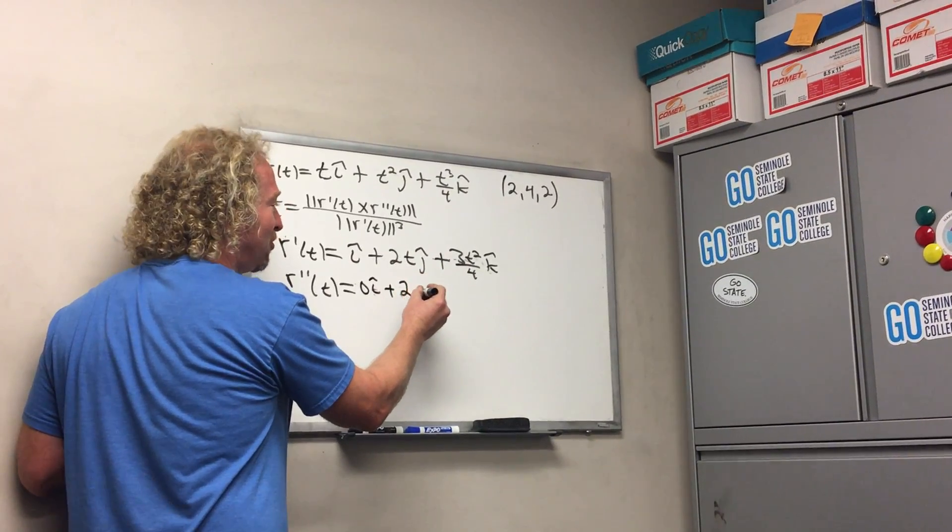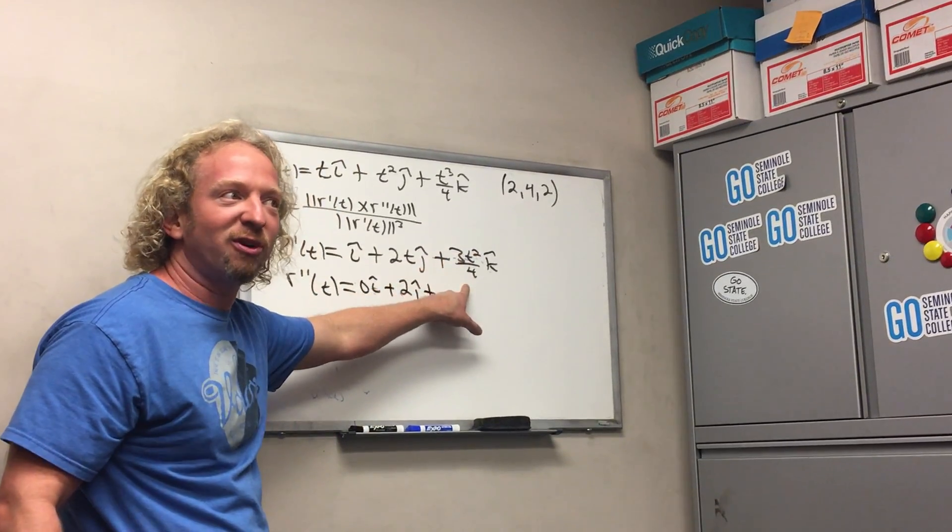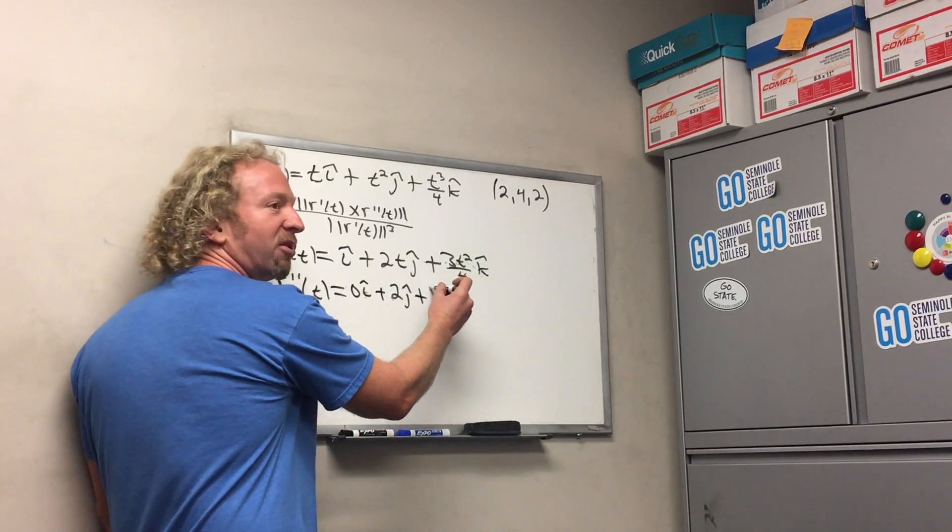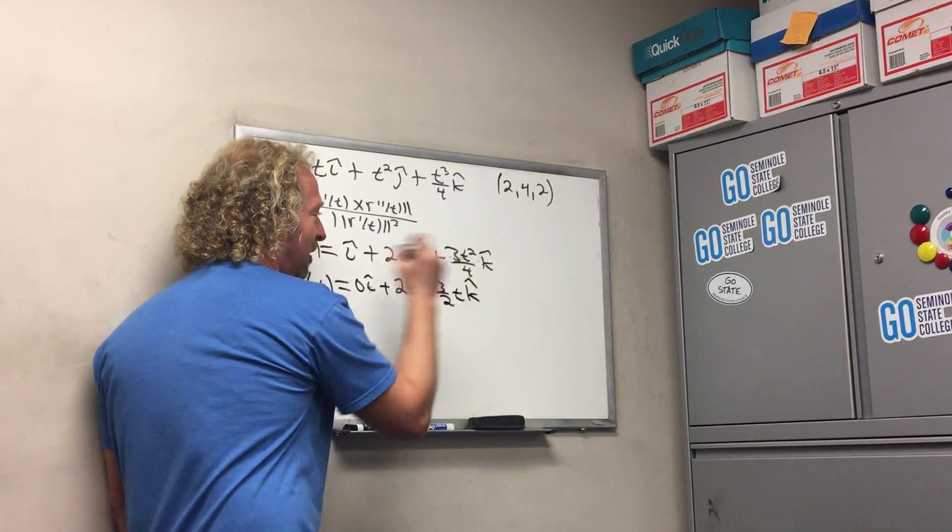Plus 2 j hat. This is what I was going to say, be careful. 6t over 4 is really 3 over 2. 3 over 2 t k hat. Yeah, that's it. Boom.